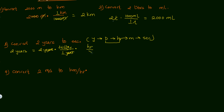Next, I need to convert days to hours: I put hours on top and days on bottom — 1 day = 24 hours. Days cancel. Then convert hours to minutes: minutes on top, hours on bottom — 60 minutes = 1 hour. Hours cancel. Finally, convert minutes to seconds: seconds on top, minutes on bottom — 1 minute = 60 seconds. The conversion chain is now complete.